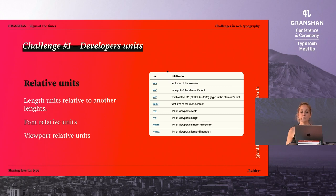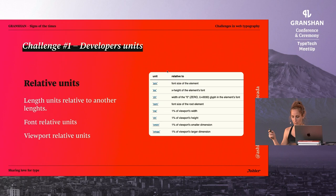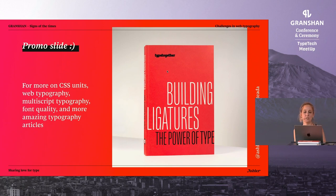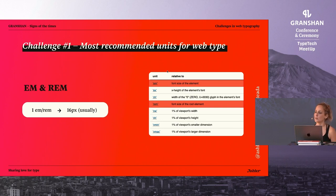There are a bunch of relative units. They can be relative to font aspects or relative to viewport aspects. We are at a typography conference, so the ones we want are font-relative units. Before I say more about relative units, I'm going to make a quick stop for a little promo. If you want to know more about CSS units with typography, multiscript typography, font quality, and more amazing typography articles, don't miss the book by Type Together. Coming back — the most recommended units for web type are M and REM.